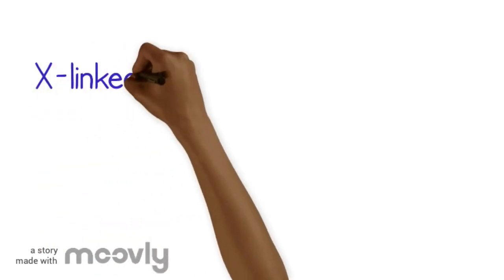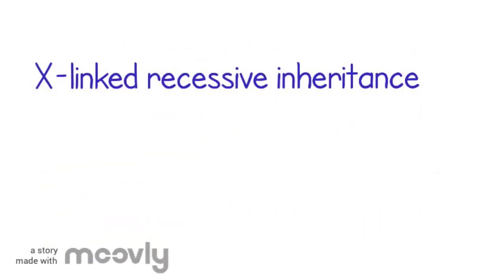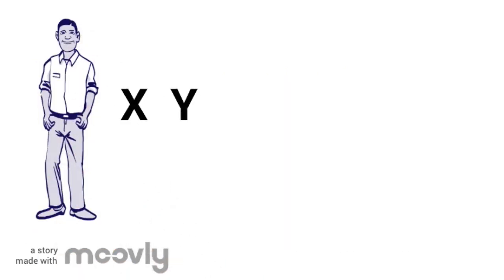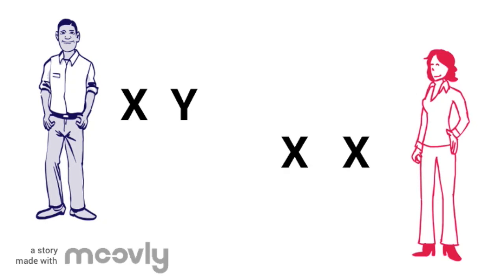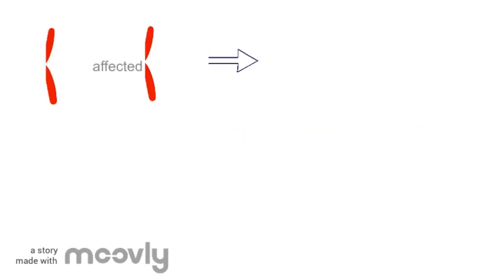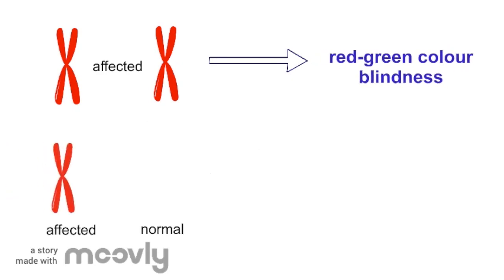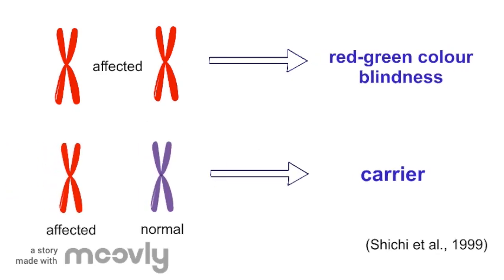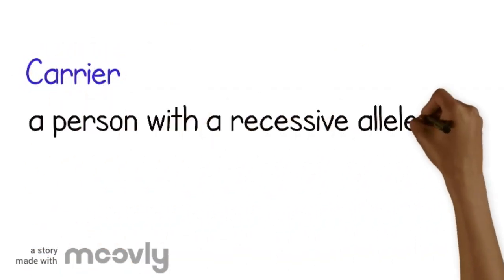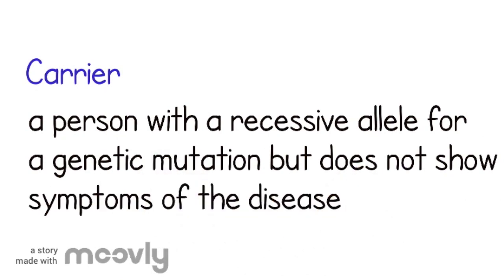As a result, the prevalence for this condition is higher in males compared to females because it's X-linked recessive. Since males have one X chromosome and females have two, males are more susceptible to the condition. For a female to express the red-green colorblindness phenotype, both of their X chromosomes must be affected. If only one X chromosome is affected, then they are termed a carrier and don't display the phenotype, but are capable of passing down the condition to their children.